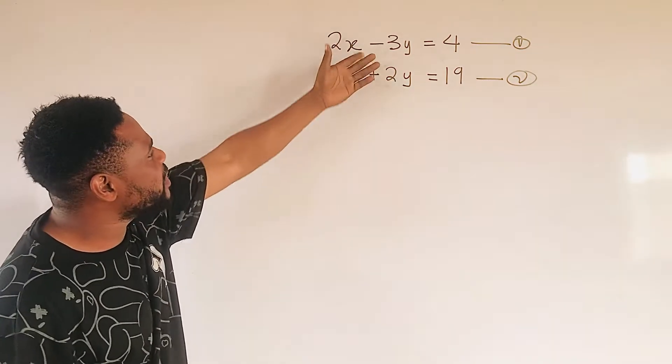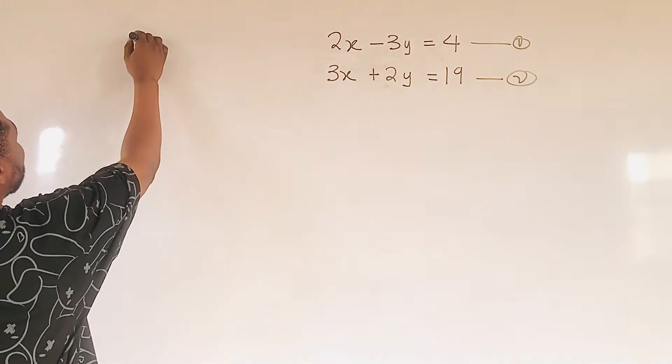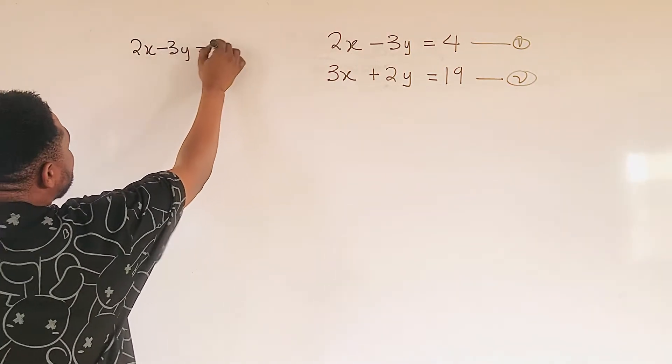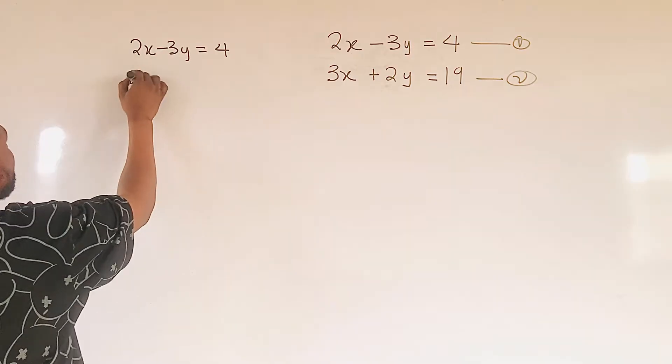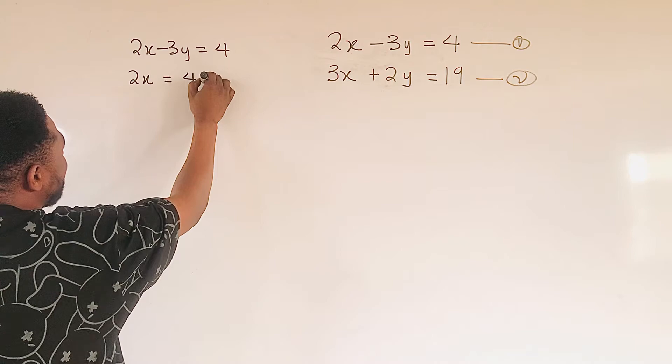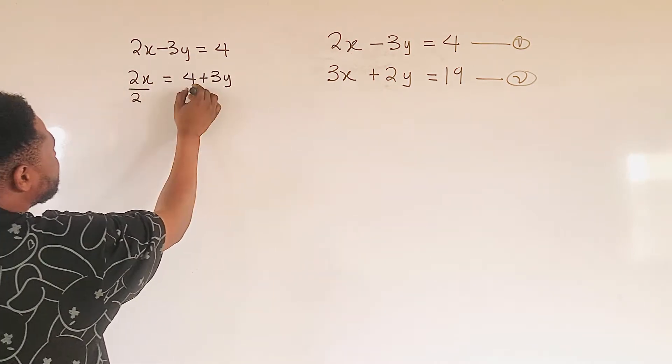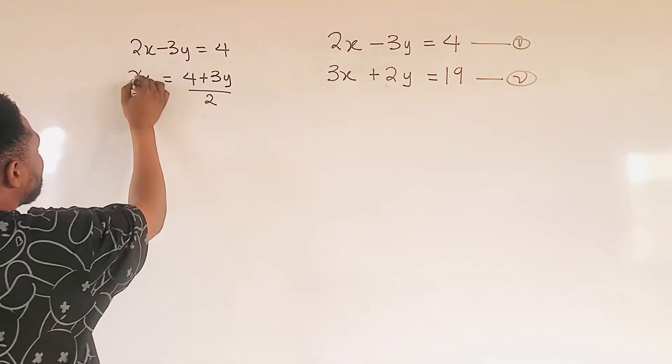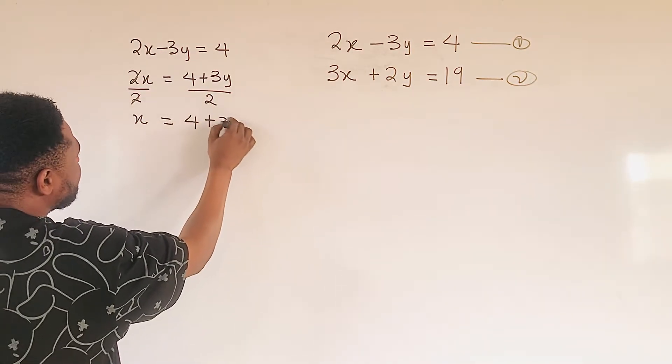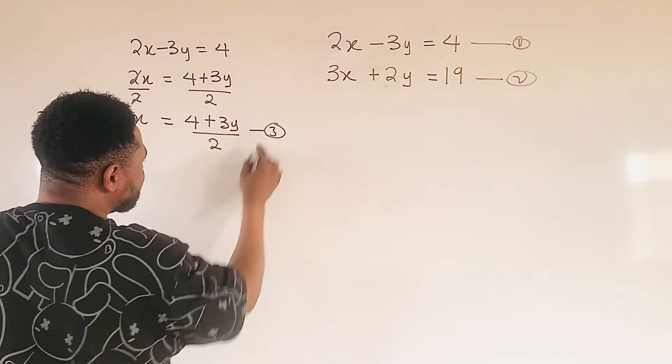Therefore, I choose equation 1, and I want to make x the subject. So from equation 1, where we have 2x minus 3y equal to 4, making x the subject, I have 4 here. I send my negative 3y, which will give me positive 3y. Divide here by 2, here by 2, and my x will be 4 plus 3y, all divided by 2. Then I can name it equation 3.